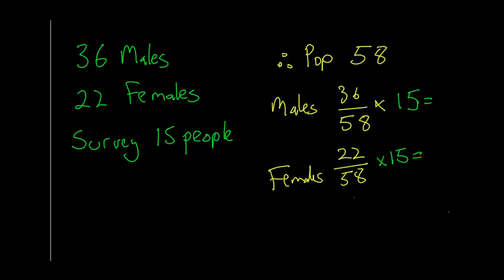So when we work that out on the calculator you'll end up getting 9.31 for the males and 5.69 for females. Now you obviously realize that you can't have .31 or .69 of a person. So therefore we've got to round up. So we round off to 9 males and we then round up to 6 females.